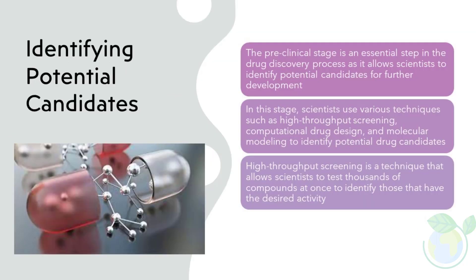Identifying potential candidates: The pre-clinical stage is an essential step in the drug discovery process as it allows scientists to identify potential candidates for further development. Scientists use various techniques such as high-throughput screening, computational drug design, and molecular modeling to identify potential drug candidates. High-throughput screening allows scientists to test thousands of compounds at once, while computational drug design and molecular modeling use mathematical models and simulations to predict the behavior of potential drug candidates.